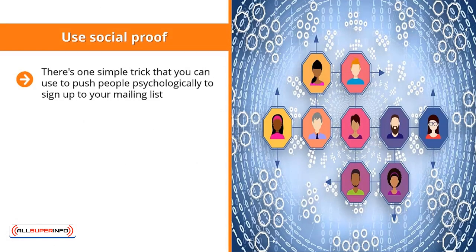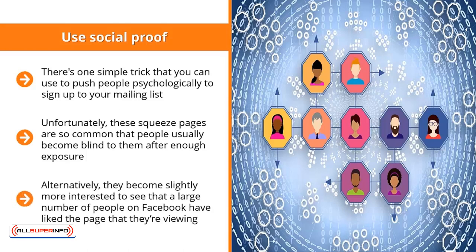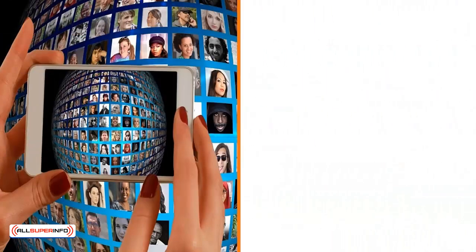Use social proof. There's one simple trick you can use to psychologically push people to sign up to your mailing list. We've all seen squeeze pages before — typically there's an email field, a call to action, and a submit button, perhaps with a nice graphic on the side. Unfortunately, these squeeze pages are so common that people usually become blind to them after enough exposure. However, people do pay attention when they see that their Facebook friends have signed up to a list, or when they see that a large number of people have liked the page they're viewing.